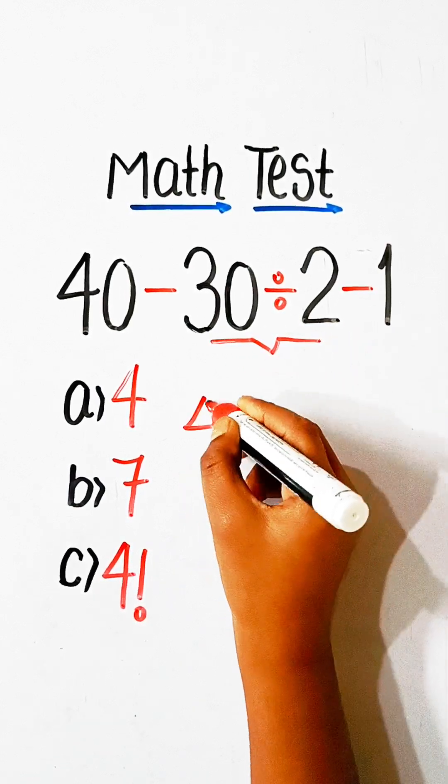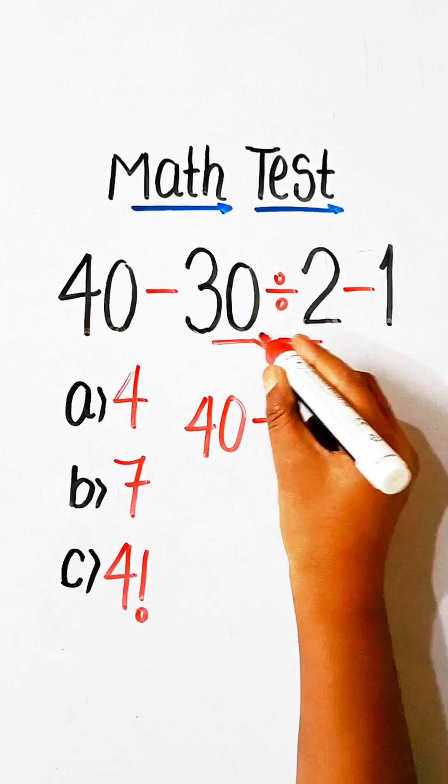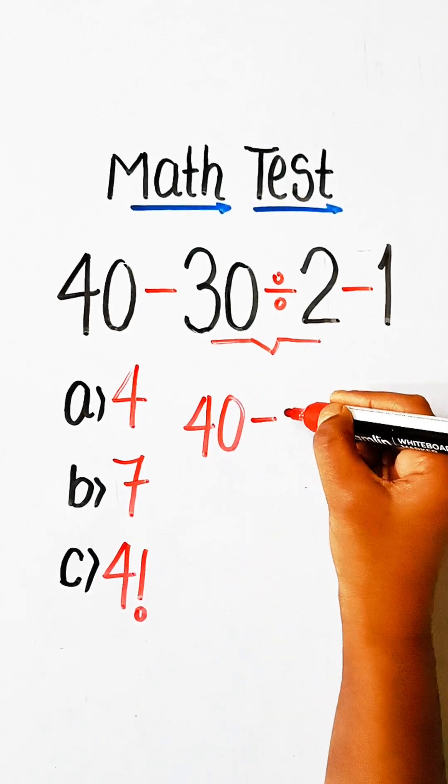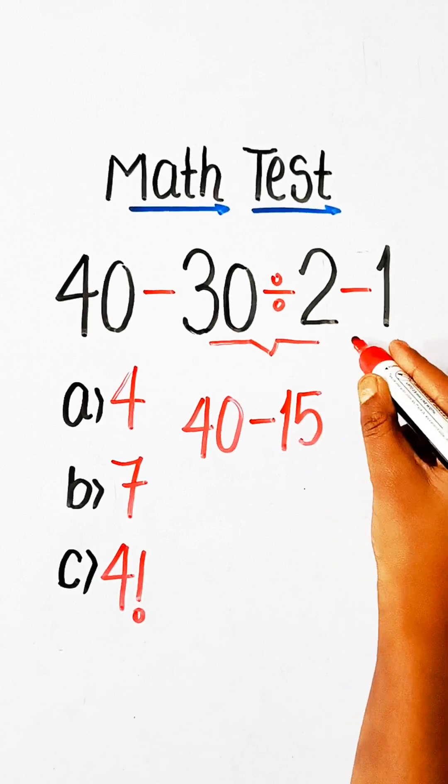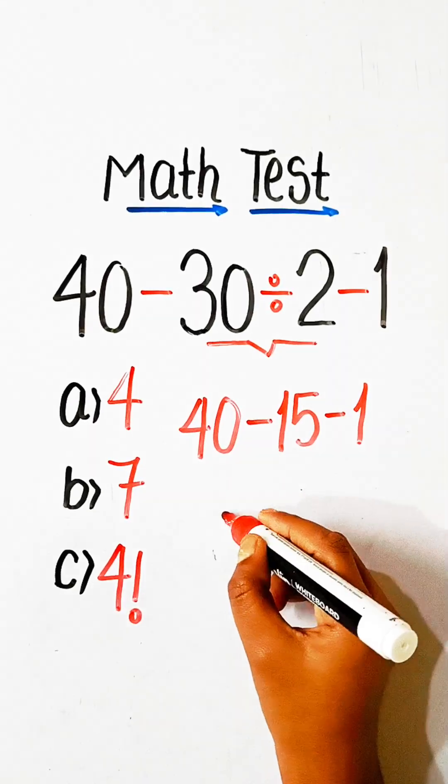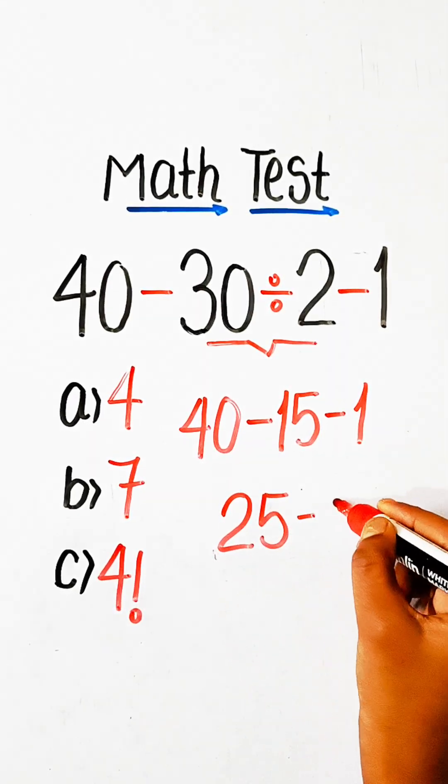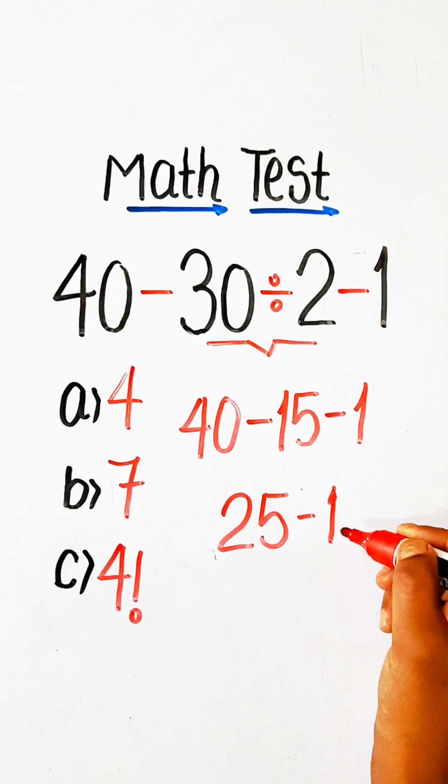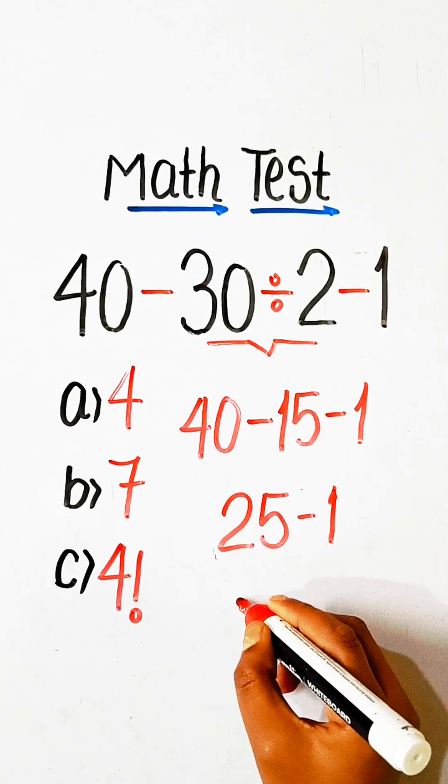So we can write 40 minus 30 divided by 2 is 15 minus 1, which gives us 25 minus 1. 25 minus 1 is 24.